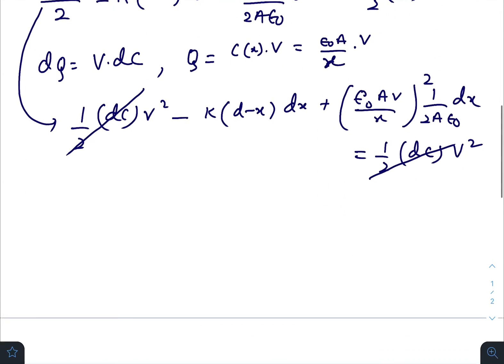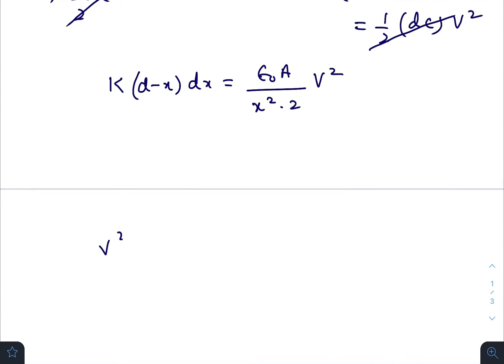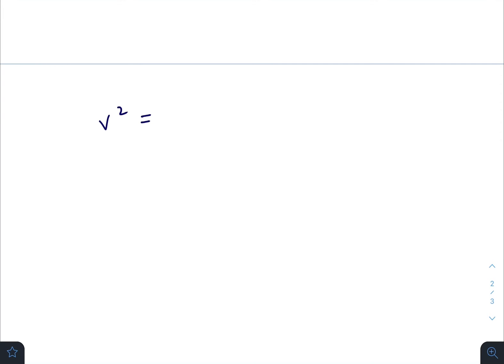So this gets cancelled out. K(D-X)·dx equals to (ε₀A/X²)·(1/2)V². So V² is equal to 2K/(ε₀A)·X²(D-X).